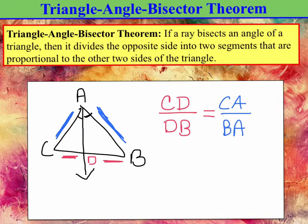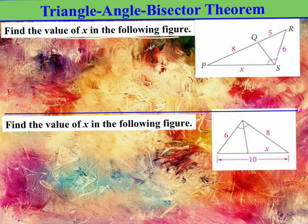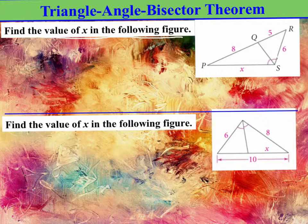Let's go ahead and apply this theorem to some problems. Okay, let's apply the triangle angle bisector theorem. Here are two figures for you to copy down along with the directions. Find the value of X in the following figures. So go ahead and write down and draw everything on the screen, and then attempt the problems by applying the triangle angle bisector theorem, and then check your answers with mine once you're done.